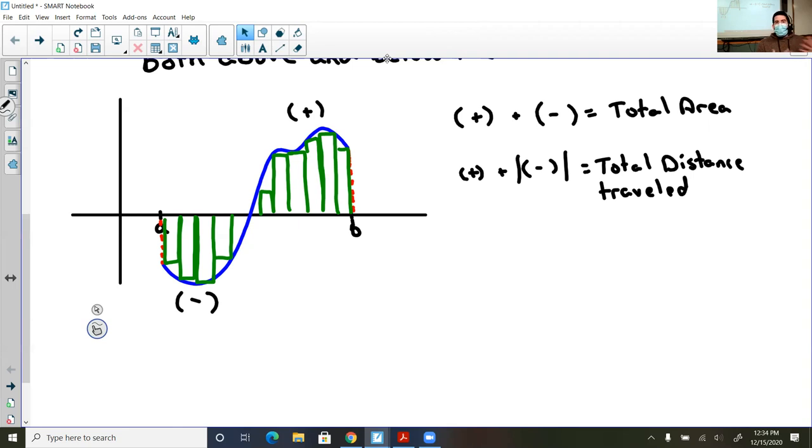Now if we were to maybe have this be a model of total distance, and we were talking about say a velocity graph or something like that, and we were finding the area under that curve, well now the context has changed. Because if you remember with the velocity curve, if you are below the horizontal axis, you're still going somewhere, you're just going in the other direction, or in the negative direction.